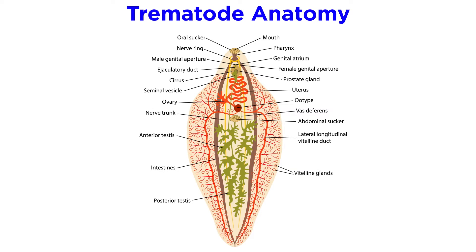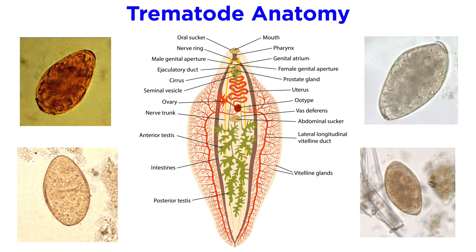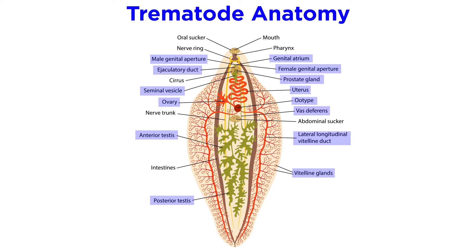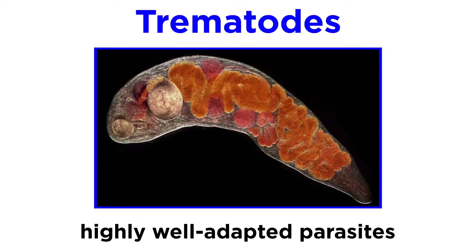Morphologically, adult Trematodes are teardrop or leaf-shaped with adhesive suckers. They are well adapted to parasitism, wielding various types of penetrating organs, cyst-producing glands, and adhesive organs such as suckers and hooks. In addition, up to 80% of an adult fluke's body is devoted to their complex reproductive system.